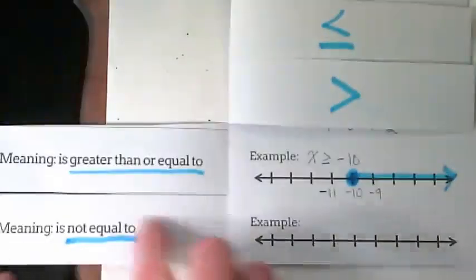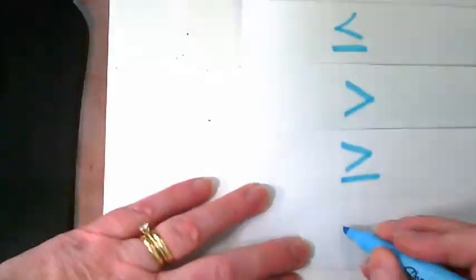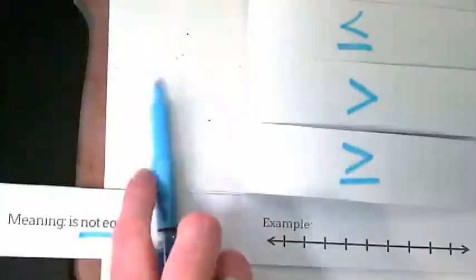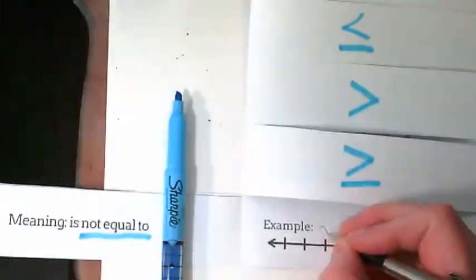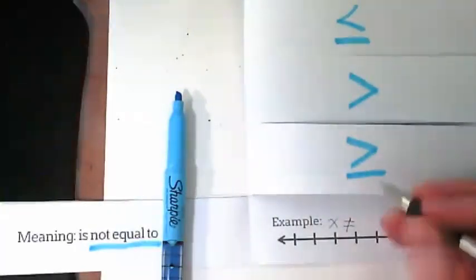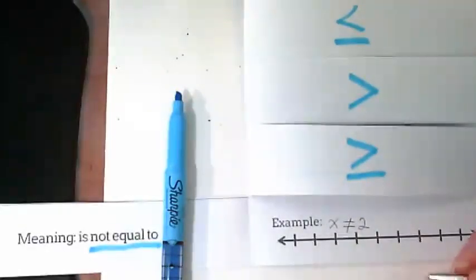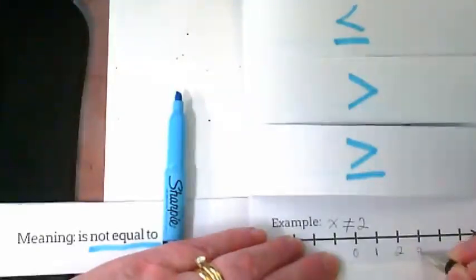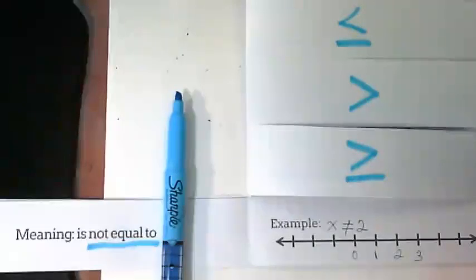Our final symbol is not equal to. If it's not equal to, I'm going to start with the same symbol we started at the top and put a slash through it. My example I'm going to write is x is not equal to 2. Any other number except for 2 would make this a true statement. Any other number is going to be able to be put in for that x.